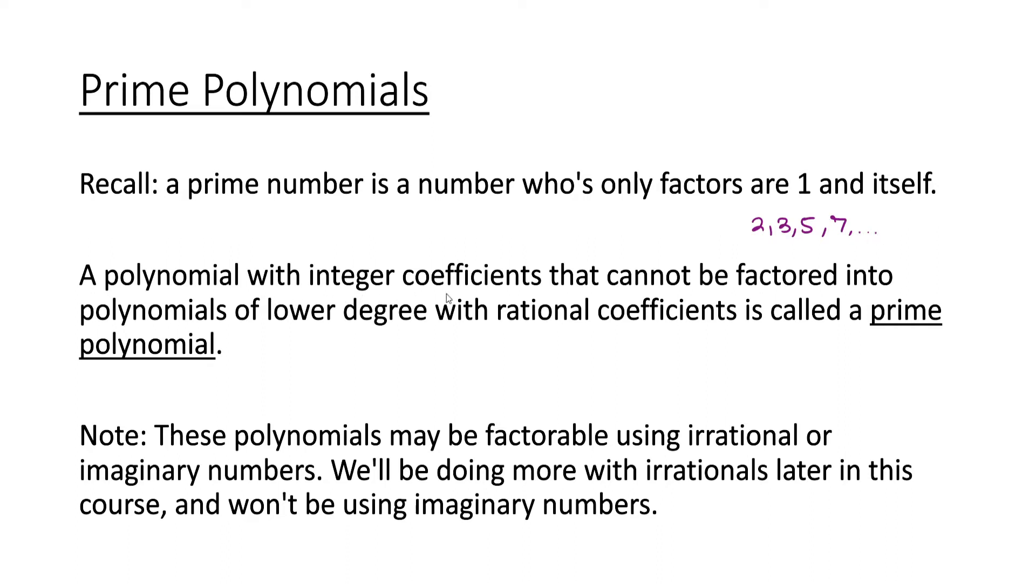A polynomial with integer coefficients that cannot be factored into polynomials of lower degree with rational coefficients is called a prime polynomial. Just like we can't take 7 and break it down into a product of any other two integers besides 1 and 7, the same is true of prime polynomials. We can't split them down into polynomial factors of lower degree.